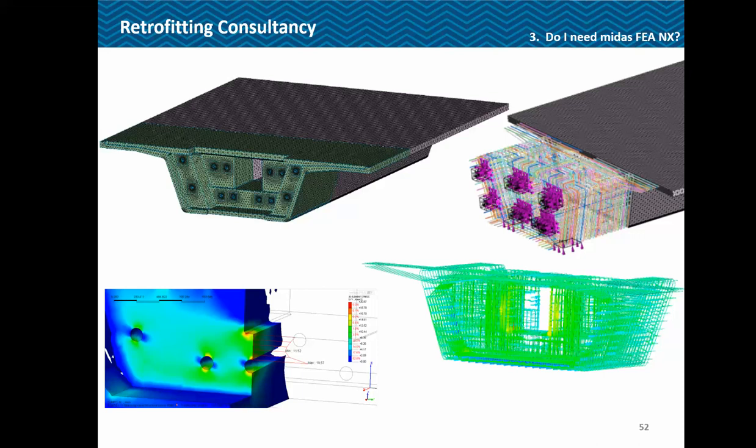For retrofitting consultancy, cracks might be reported at a site. To realistically model that with actual loading, reinforcements and all, such a model can be generated in Midas FEA and you can obtain actual stresses with nonlinear load distribution and check strains and stresses in the reinforcement — giving an idea whether the structure is still usable, could be retrofitted, or needs to be dismantled.